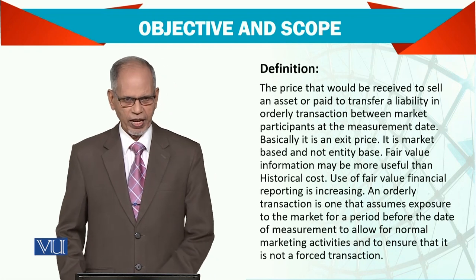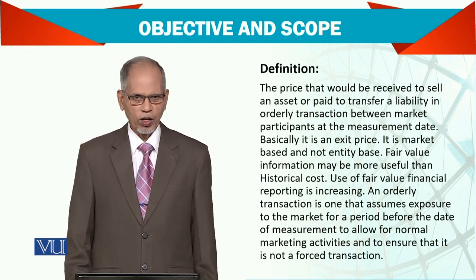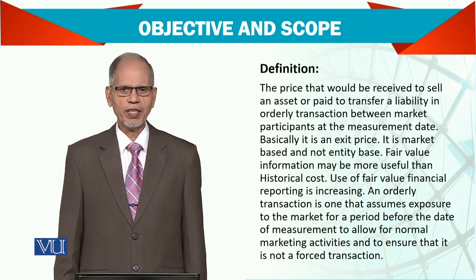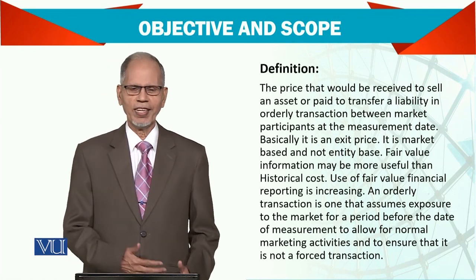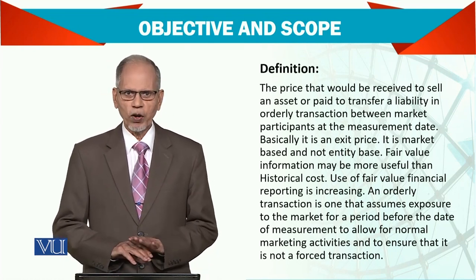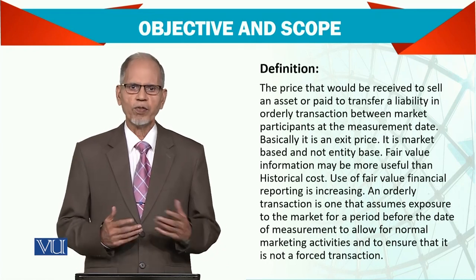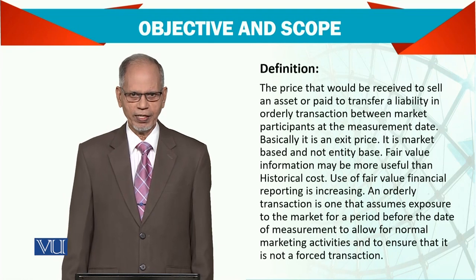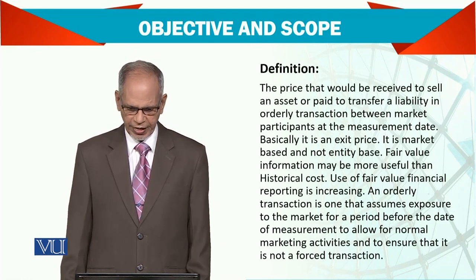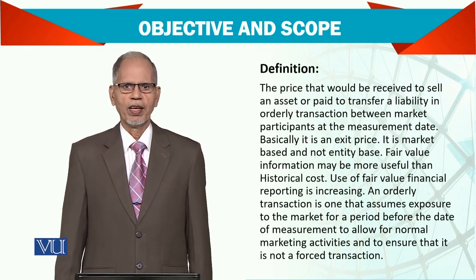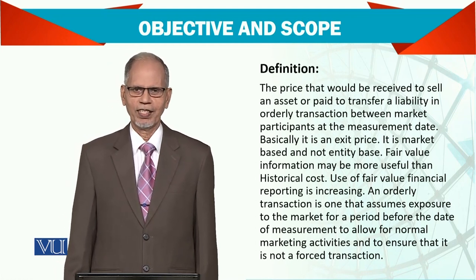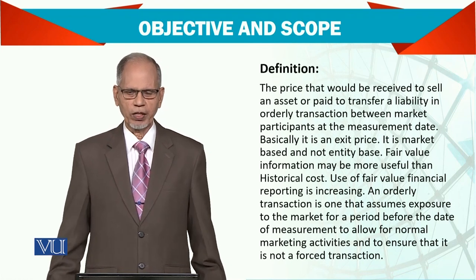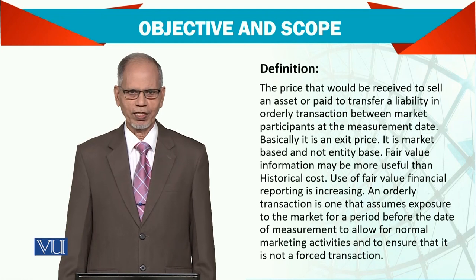So we have assets and we have liabilities. And the standard says clearly: orderly transaction. An orderly transaction means that nobody is forcing you to sell it and nobody is forcing you to buy it. It is simply open — if somebody is interested to buy, what they are going to pay for it. Normal transactions in the market. Then we have between market participants — the standard says market participants, the people who are going into the market and buying and selling goods and services, or maybe assets and liabilities.